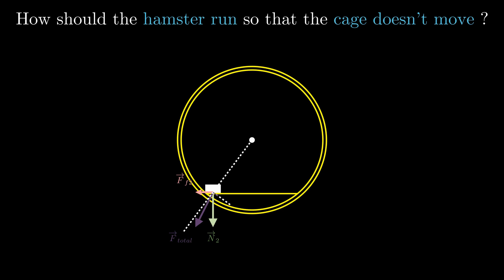We can achieve this by only modifying the friction force, since the normal force is equal to the weight of the hamster. Now let's introduce some geometry. We denote the height from the platform to the center of rotation as h, and the distance of the hamster from the center of the platform as x. Let's denote the angle between the radial direction and the height as alpha. Since the total force is in the radial direction and the normal force is in the height's direction, the angle between them is also alpha. We see that we have two similar shapes, so the frictional force is proportional to x and the normal force is proportional to h.